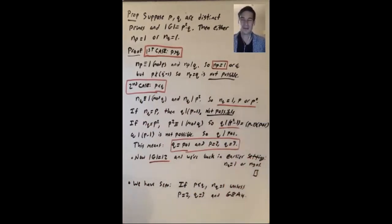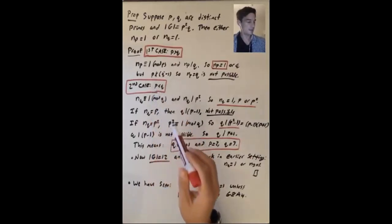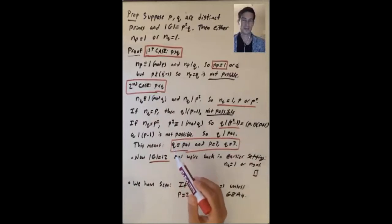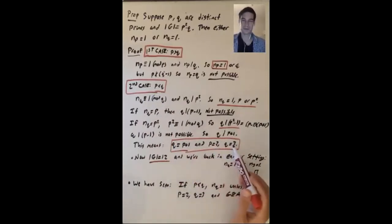So we have to have q divides p plus 1. But if q is a prime that's bigger than p, and it divides p plus 1, the only way for that to happen is p plus 1 has to be at least as big as q. But that means that q has to be equal to p plus 1. So the only time that can happen for two primes is if p equals 2 and q equals 3.